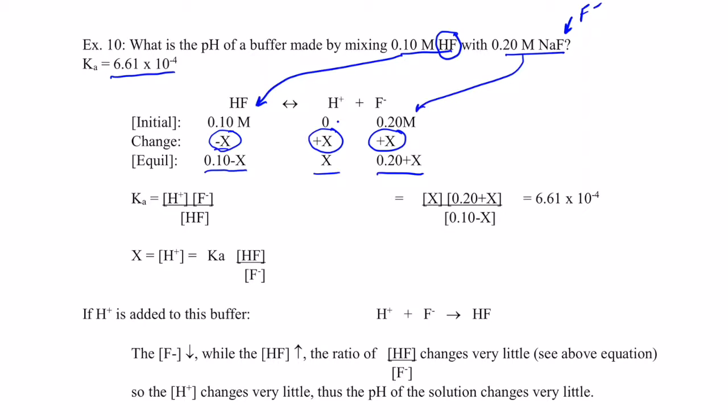Now, if I write the equilibrium expression for this acid, I get the Ka equals the H plus times the F negative all over HF. So I can now plug in my equilibrium concentrations, where the H plus is X, my F negative is 0.20 plus X, and my HF is 0.10 minus X, and that all equals my Ka, which is 6.61 times 10 to the negative fourth.